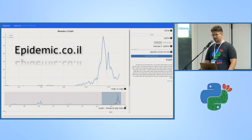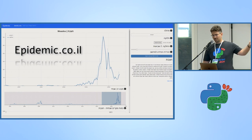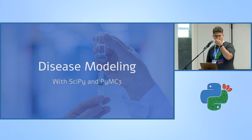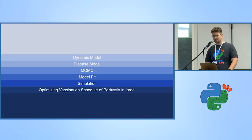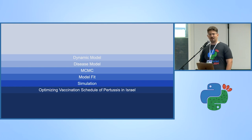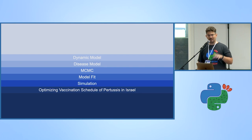On this side project — which I welcome you all to visit, epidemic CYL — you can see data about diseases in Israel since 2004 and how they progress, not only for measles but for around 30 or 40 diseases. That's the shameless plug for my website. This talk is about disease modeling with SciPy and PyMC — it's the 40-minute one, so I hope you're all ready.